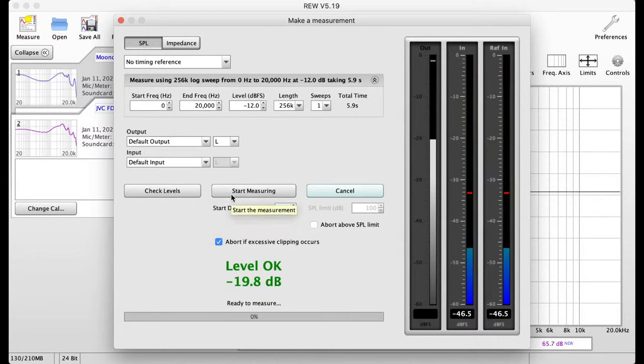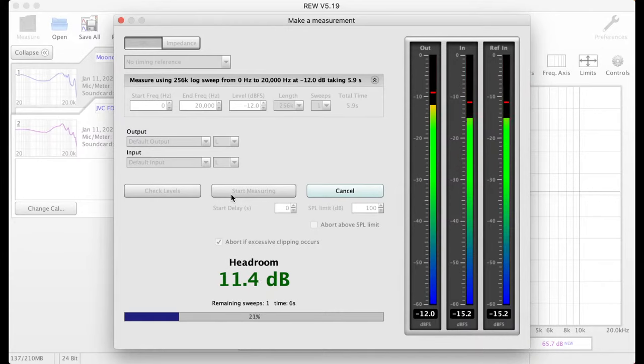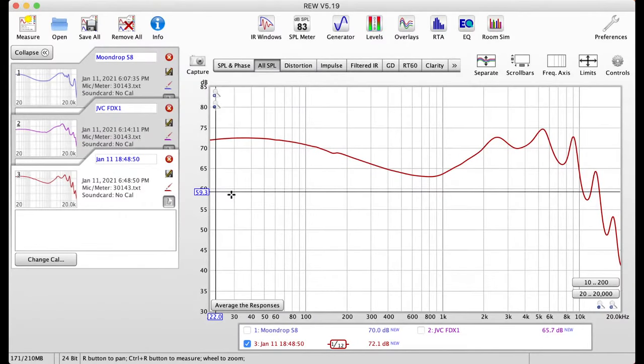And I can also say that based on the fact that that is about four bars of volume on a Mac, which is not a universal standard of measurement, it seems to be a relatively sensitive IEM actually. So we've got our level set. I'm going to go ahead and do a sine sweep and get an initial reading. All right, there you go. And there is your frequency response of the Fiio FD5.